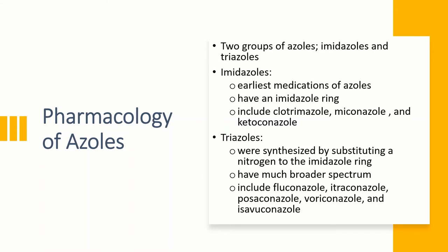Triazoles were synthesized by adding a nitrogen atom to the imidazole ring; therefore, triazoles have three nitrogen atoms in their ring. Medications under this group have a broad spectrum of antifungal activity compared to imidazoles, and include fluconazole, itraconazole, posaconazole, voriconazole, and isavuconazole.